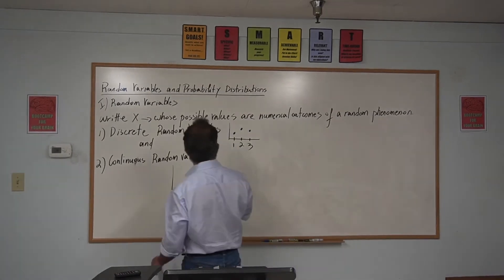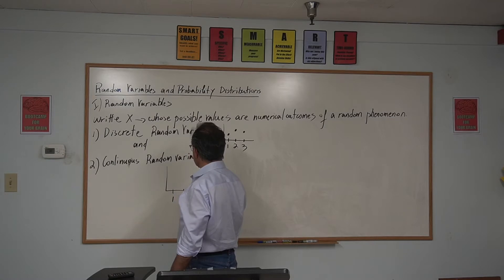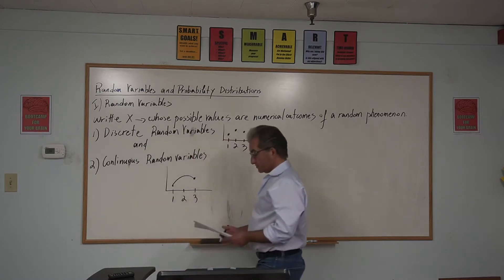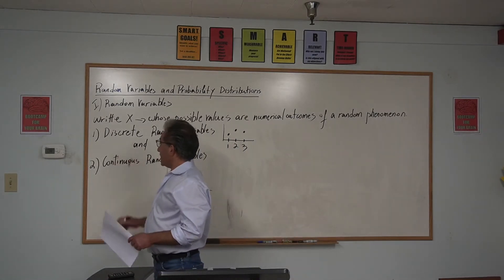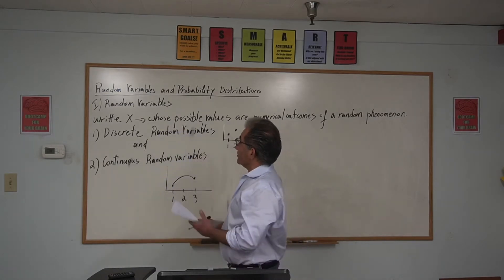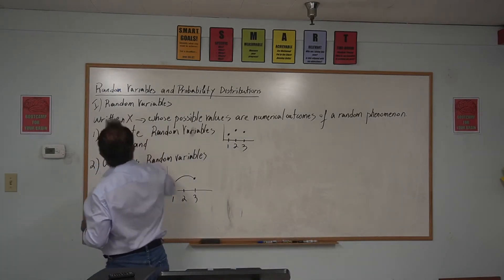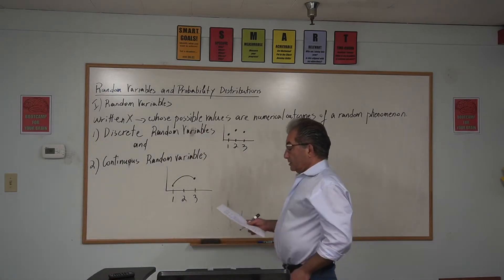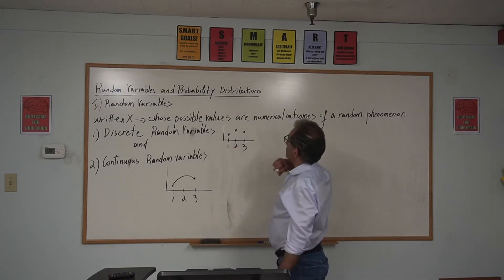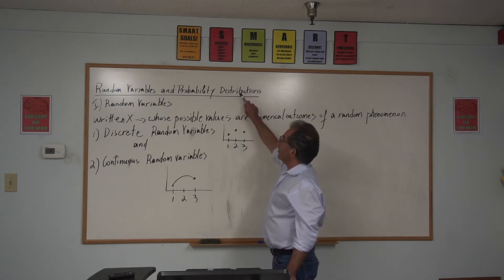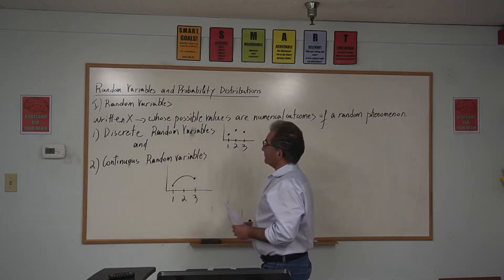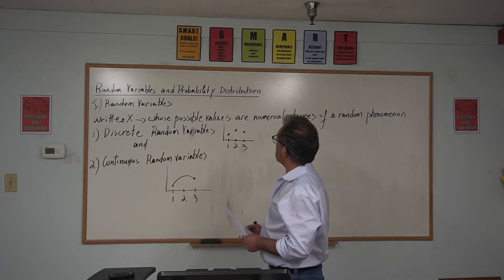So if I show it to you graphically, you start at one and go to three all the way — no gaps. We use random variables to make probability distributions. Talking about probability distributions: a probability distribution can be a table or a formula. We're going to start with discrete random variables and make a probability distribution table.